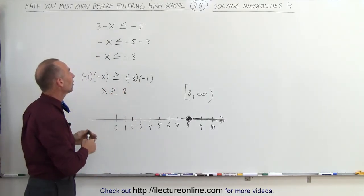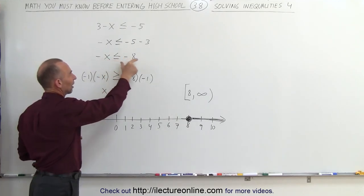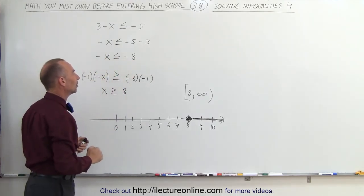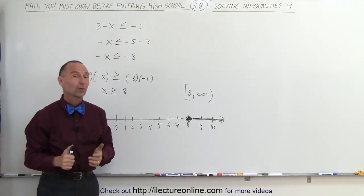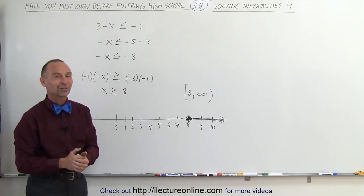But again, the important thing is, if you want to turn this into a positive and multiply this by negative 1, of course you have to do the same thing to both sides, then you must flip the inequality symbol around. So be careful when you do that, otherwise you won't get the right answer. That's how it's done.